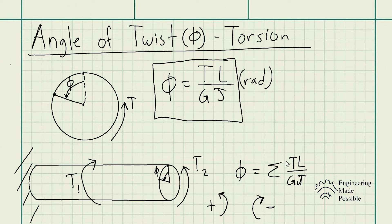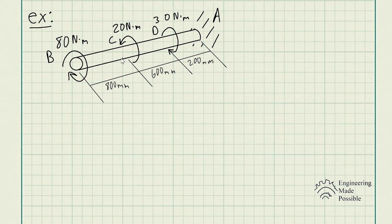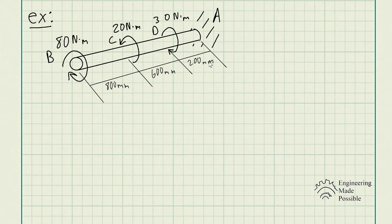Let's go ahead and do an example. The problem statement is: the 20mm diameter A36 steel shaft is subjected to the torques shown. Determine the angle of twist of end B. Here is the steel shaft with all the torques being applied: 80 N·m, 20 N·m, 30 N·m at locations B, C, and D. The pipe is fixed at A. The relative locations are 800mm, 600mm, and 200mm where the torques are applied. The shear modulus of steel is 75 gigapascals.